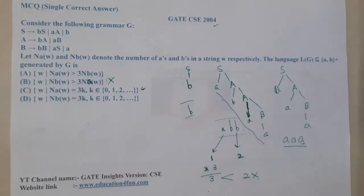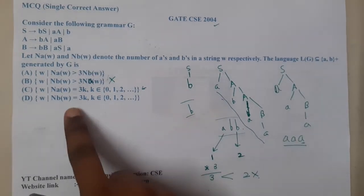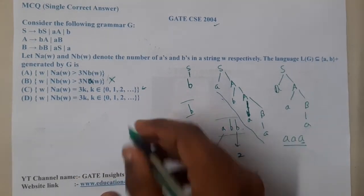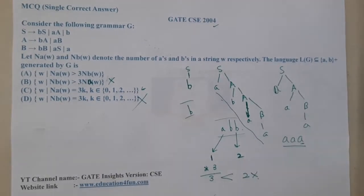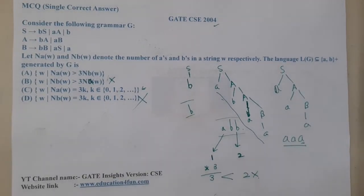Let us go through option D. Option D says that the number of b should be three. So I got two examples, so that's absolutely wrong.